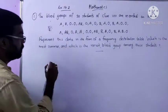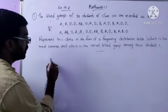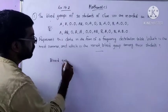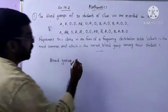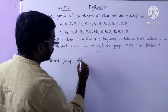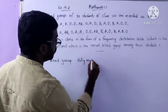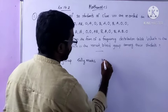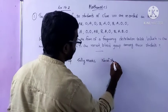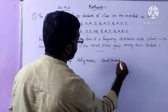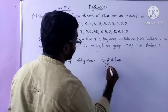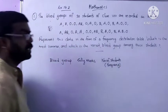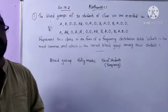We can write the title of the first column as Blood Group, next we can write Tally Marks, and next we can write Number of Students. This is termed as Frequency — how many times the data repeats is what is called Frequency.